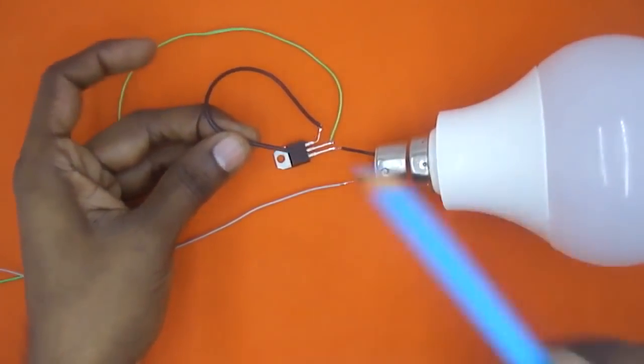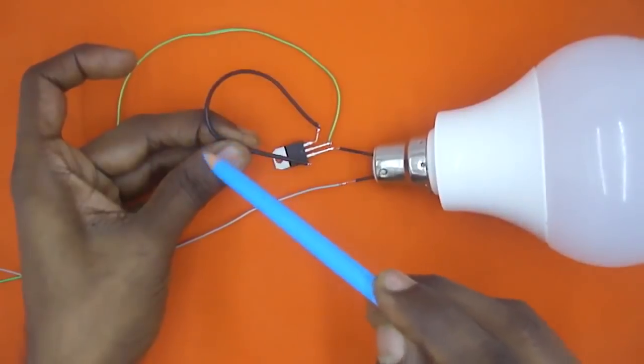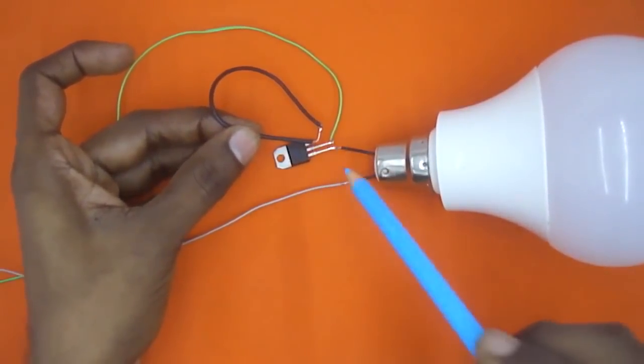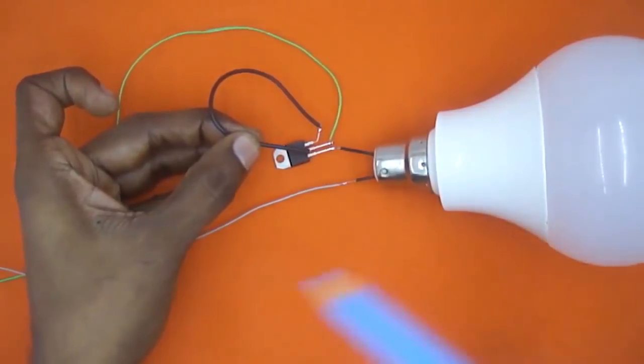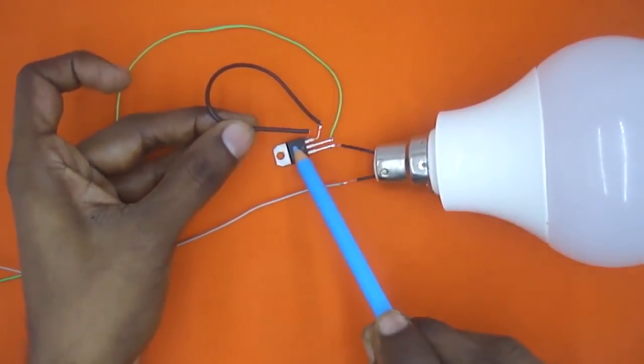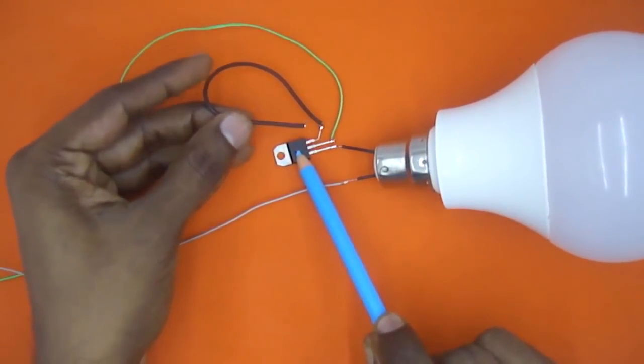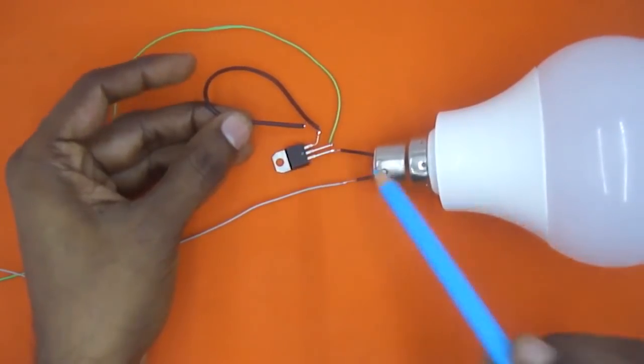The current flowing through this wire is only a few milliamperes. But the current flowing through this green wire, this black wire, and the bulb could be high. I am using a TRIAC which can handle current up to 12 amperes.